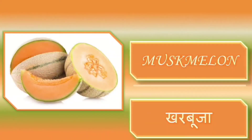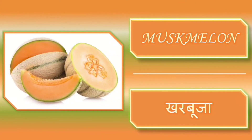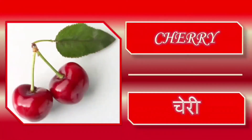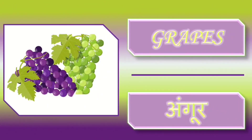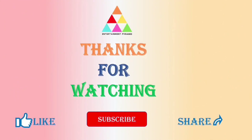Musk melon — musk melon means kharbucha. Cherry — cherry means cherry. Grapes — grapes means angu. So these all are the fruit's name in English.